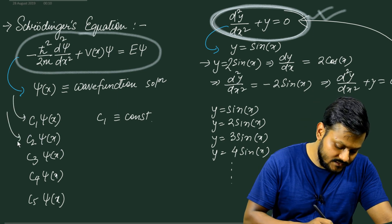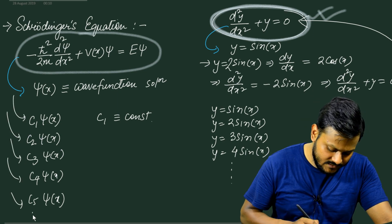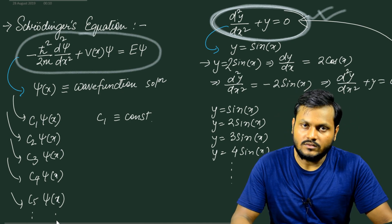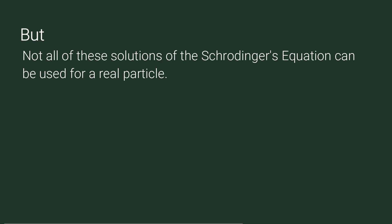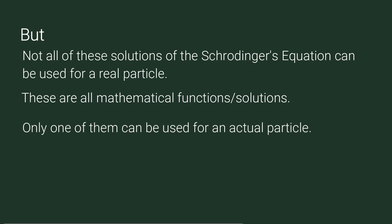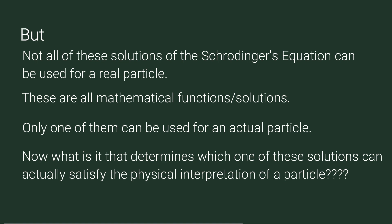So basically c1·psi(x), c2·psi(x), c3·psi(x), and so on — there are infinite solutions of the Schrödinger's equation. But not all of these can be used for a real particle. These are all mathematical solutions of a mathematical equation, but only one of them can be used for an actual particle.